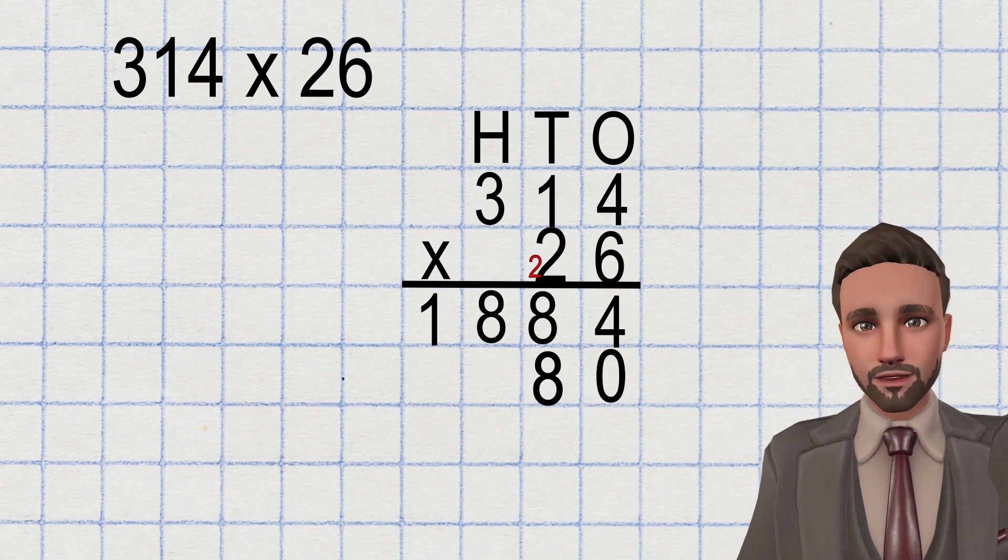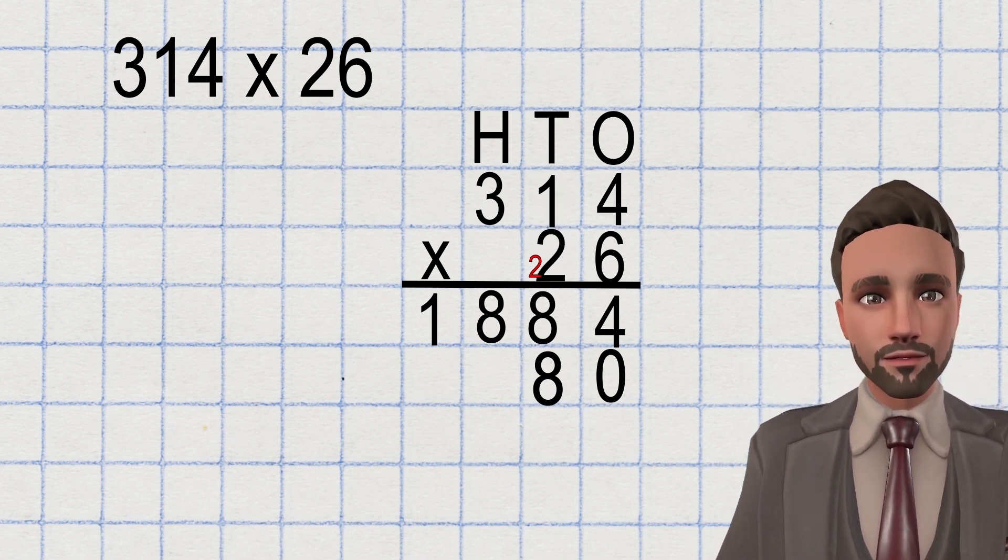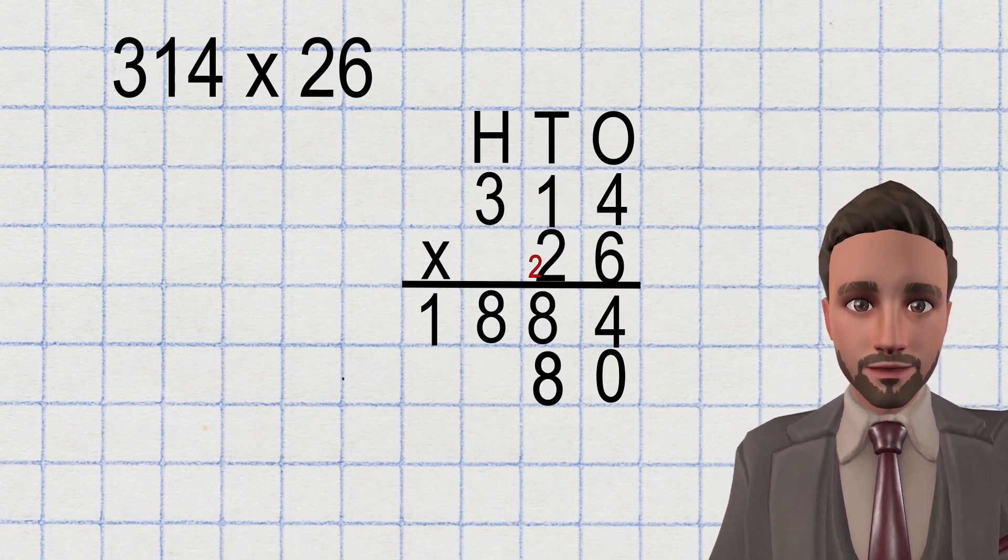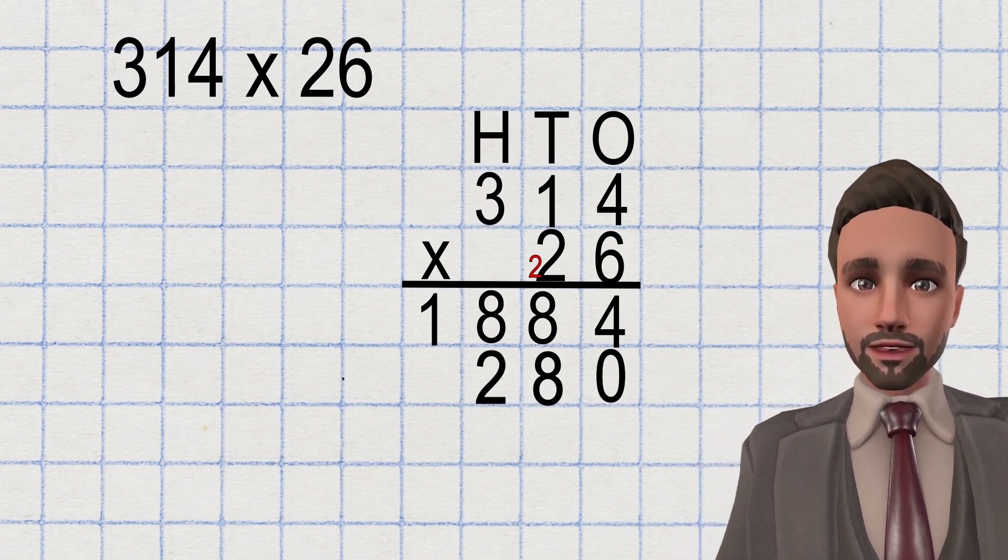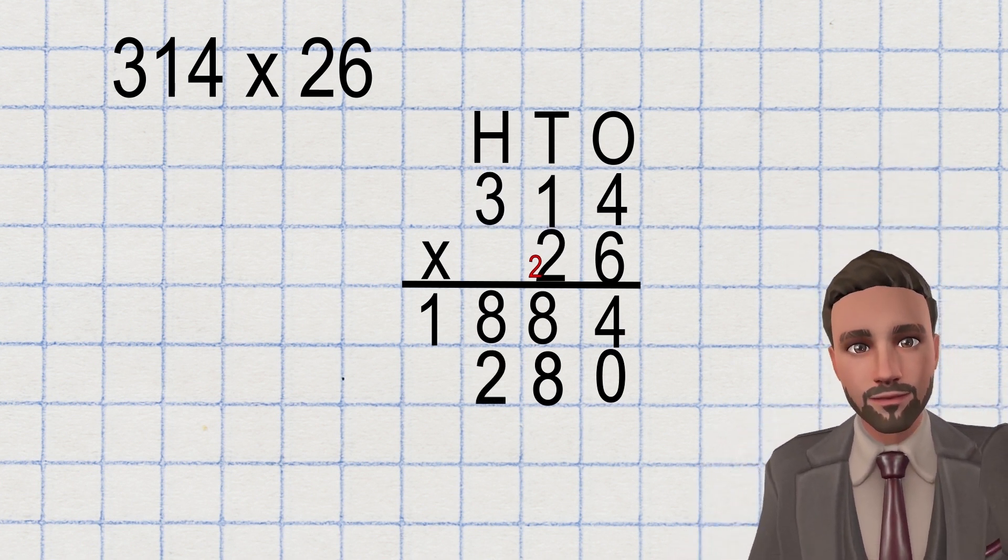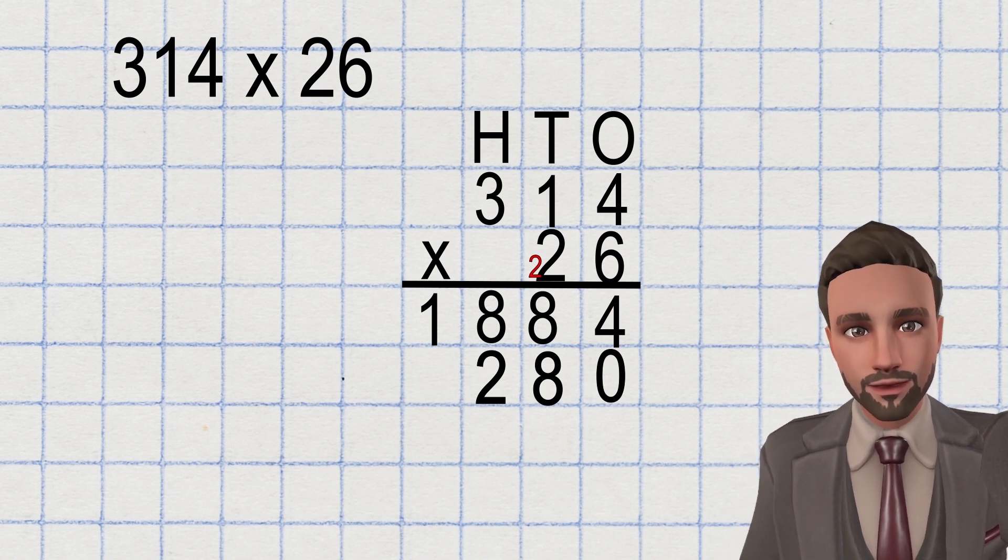Next we multiply the 1 by 2, giving us 2. Placing that one column to the left here. Then we multiply the 3 by 2 giving us 6. Putting that one column to the left here. Pretty simple isn't it?